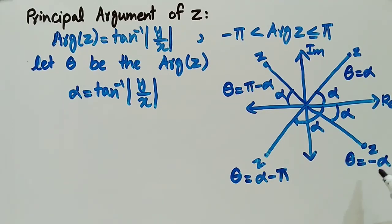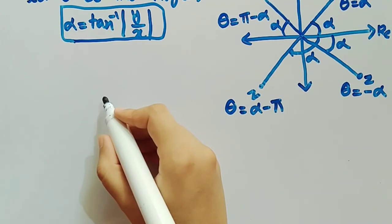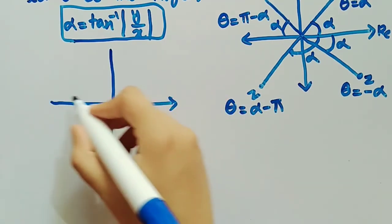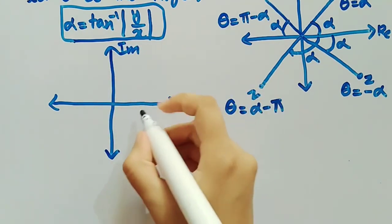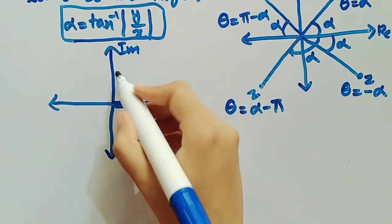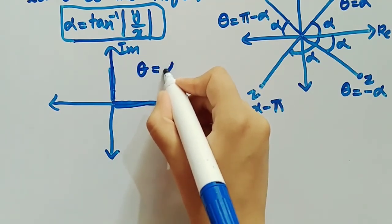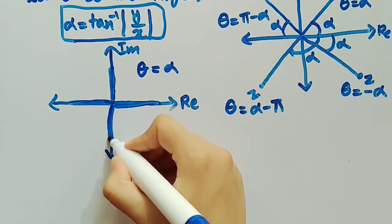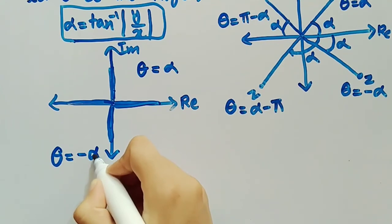In all cases, the value of α is calculated using α equals tan inverse of y by x. Now consider the case where the complex number lies on the positive or negative real or imaginary axis. If it lies on the positive real or imaginary axis, the principal argument θ equals α. But if it lies on the negative real or negative imaginary axis, then θ equals minus α.